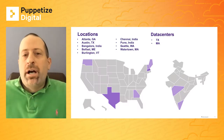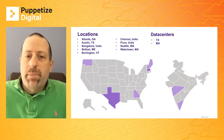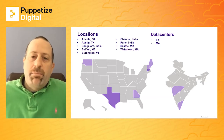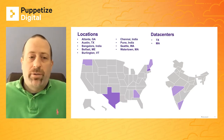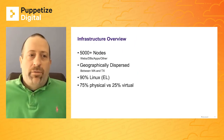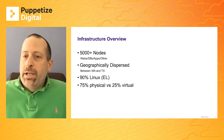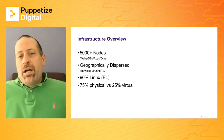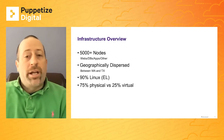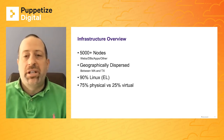We have locations currently in Georgia, Texas, a few areas in India, Maine, Vermont, Washington State, and Massachusetts. We currently have data centers located in Texas and Massachusetts. Our infrastructure has about 5,000-plus nodes — a mix of webs, apps, databases, and other infrastructure-related nodes, geographically dispersed between Massachusetts and Texas. About 90% of the infrastructure is Oracle Enterprise Linux, and right now we're about 75% physical and 25% virtual.